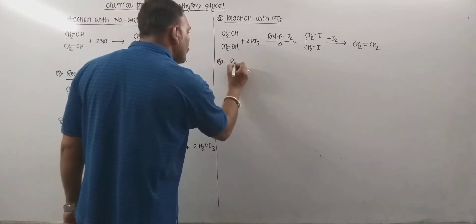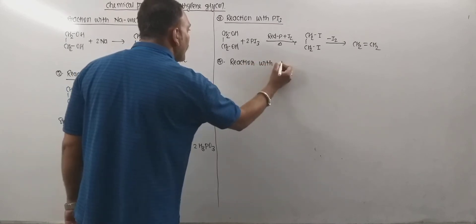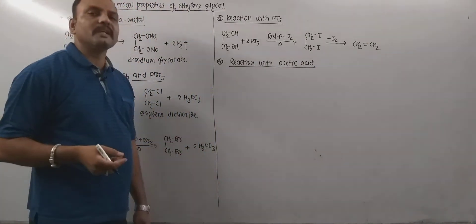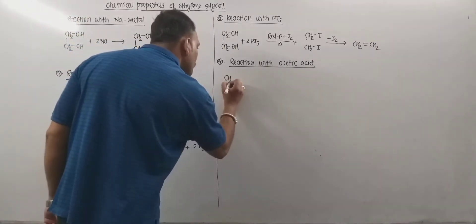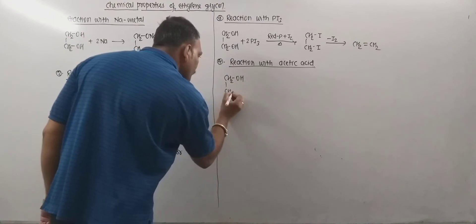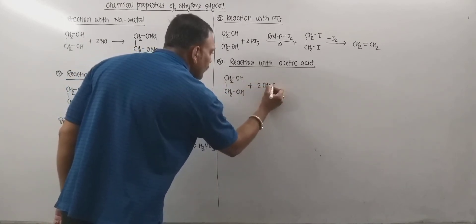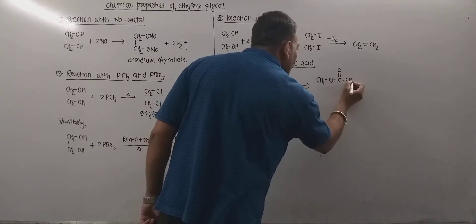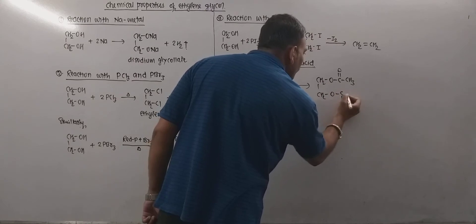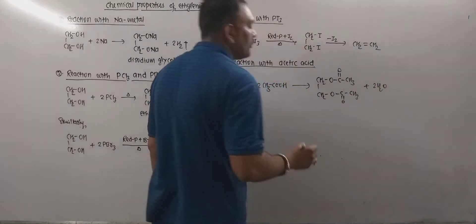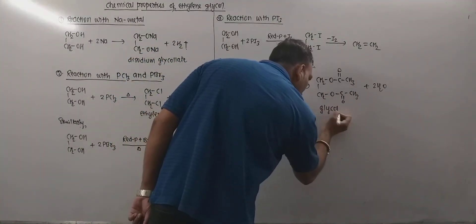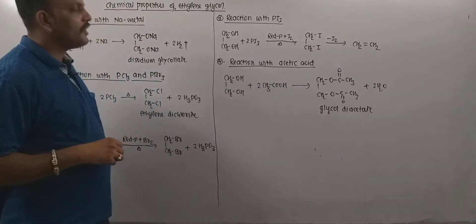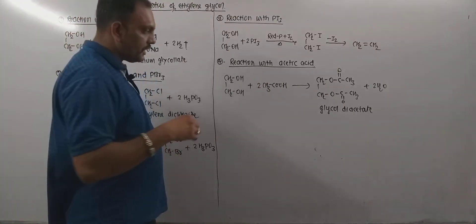The next important property is the reaction with acetic acid. We know alcohols react with carboxylic acids producing esters through esterification. Likewise, when we treat ethylene glycol with acetic acid, esterification takes place and the product formed is known as glycol diacetate.